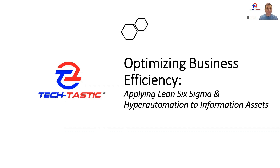Hello, and welcome to Tektastic's video series, Optimizing Business Efficiency. I'm Brett Cernak, and today in this first episode of this video series, we're going to be discussing applying Lean Six Sigma and hyper automation to information assets. We're going to be discussing information assets, why they're so important to a business, as well as the fact that they are an asset, and how we can better think of how these flow through our businesses, as well as how we can apply Lean Six Sigma and hyper automation.